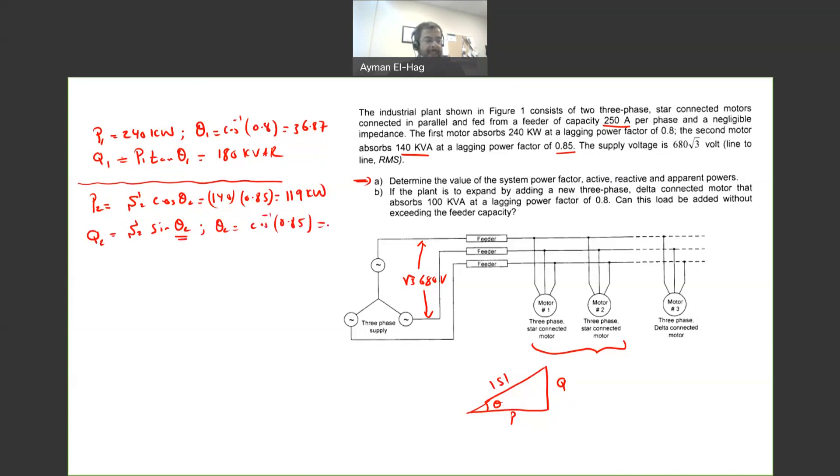And from that, you can find that your Q2 is equal to 140 times sine of 31.7. And this will give me 73.75 kVAR. Okay, so it's the same approach as we did before.